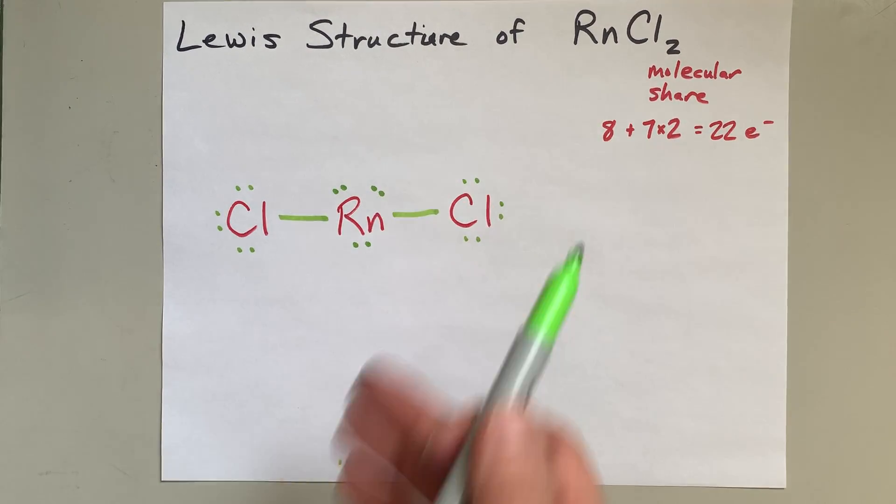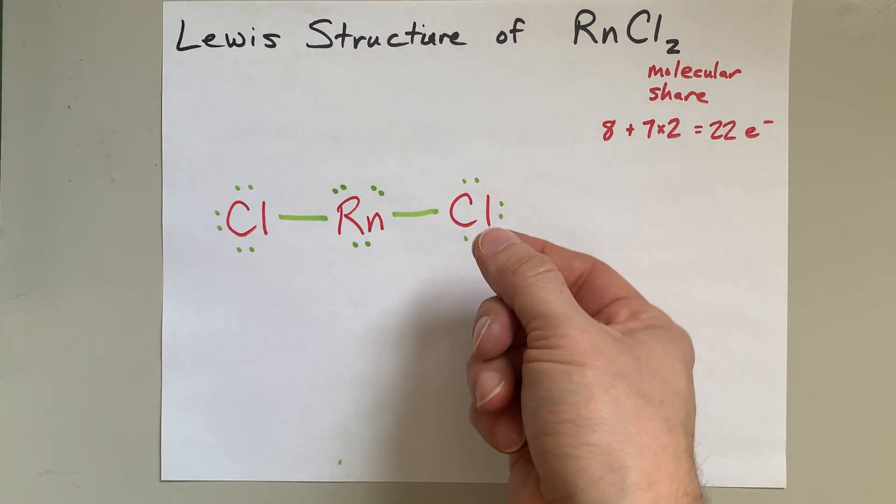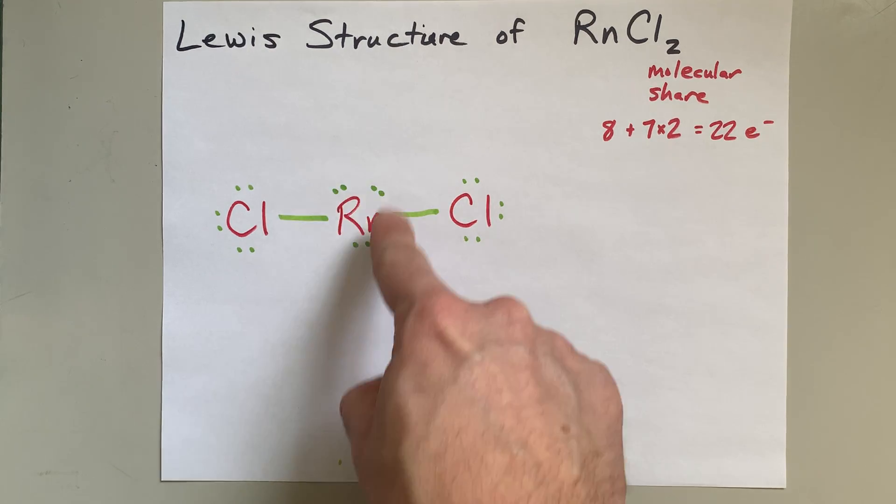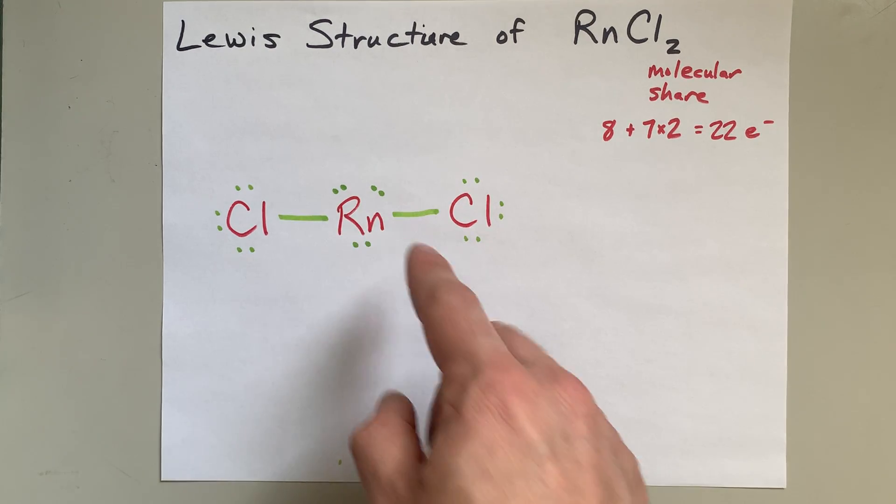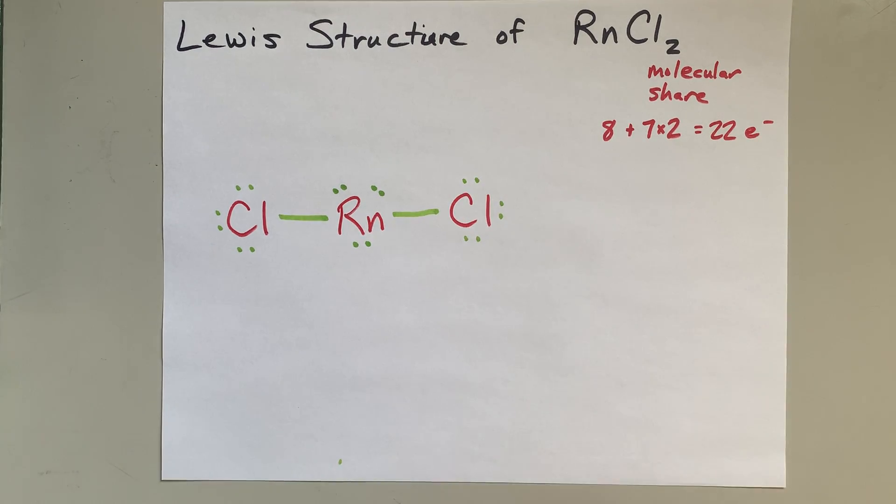This is the complete Lewis structure for radon dichloride. If you're into VSEPR shapes, then you have three lone pairs around the equatorial axis of the radon. One chlorine sticking out one side and another chlorine sticking out the other side. It's a linear molecule.